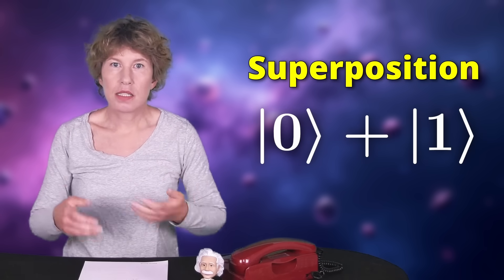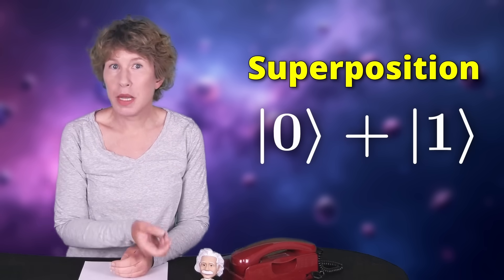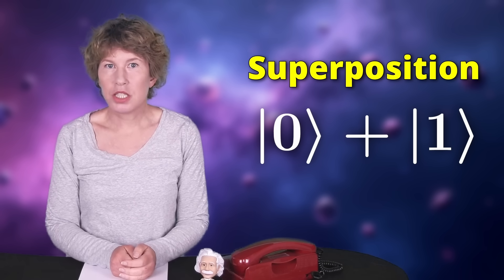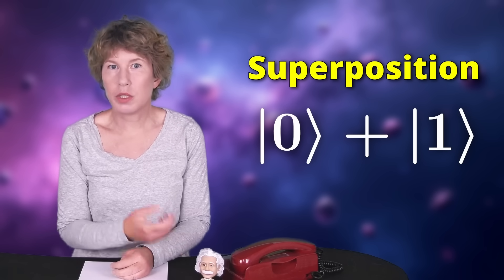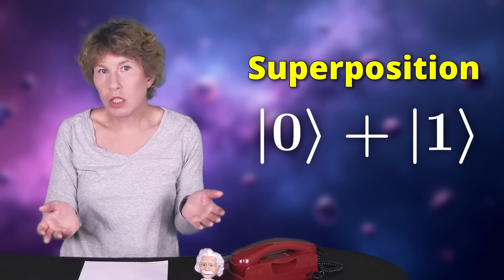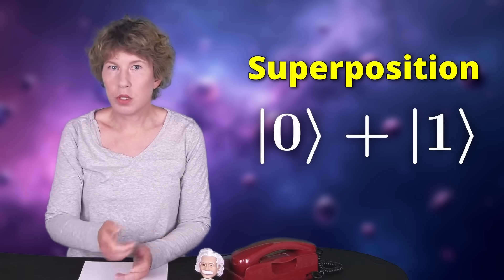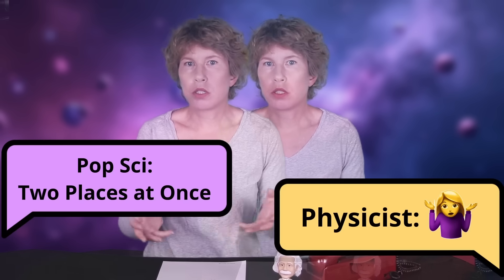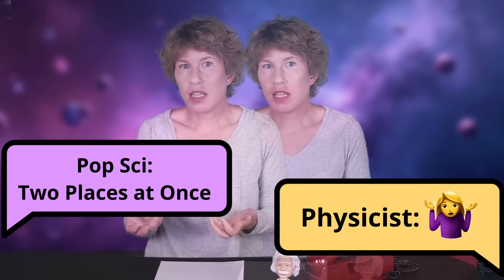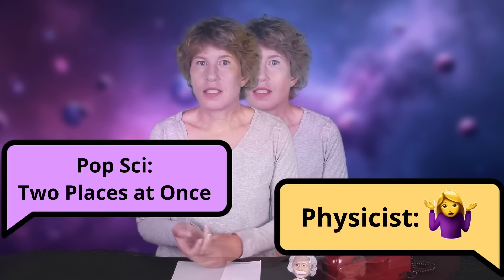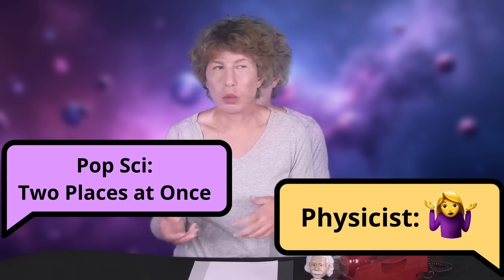Quantum particles can be in two places at once. This statement is both correct and isn't. It's a weird verbal expression of a mathematical expression. The mathematical expression is that particles are described by a wave function which is a sum of two places. That's what we call a superposition. Yes, a superposition is just a sum. But what does it mean for something to be in one place plus another place? I have no idea. Actually, I think no one has any idea what it means. But because we need to talk about it somehow, we say the particle's in two places at once. Is that what the particle really does? Who knows? What even is real?